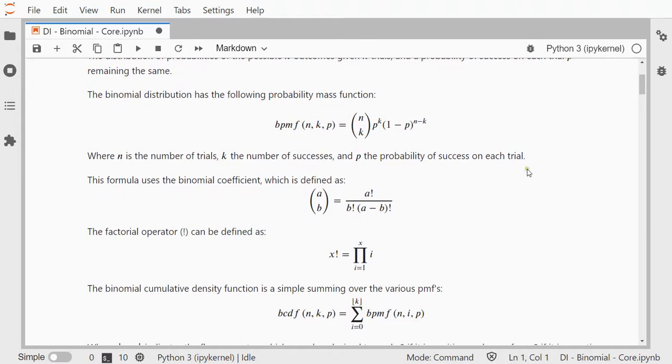These are the formulas for the binomial distribution. The two that I'm mainly focusing on is the probability mass function and the cumulative density function.